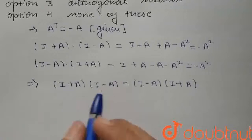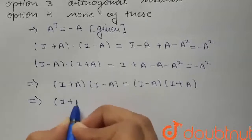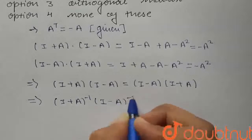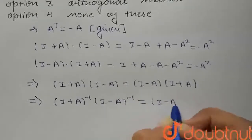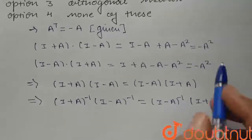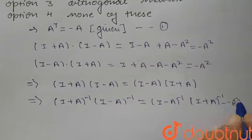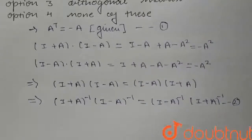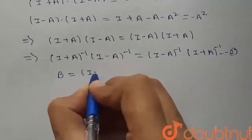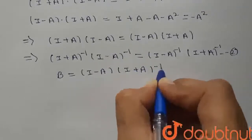Similarly, the same holds for the inverses. (I plus A) inverse into (I minus A) inverse equals (I minus A) whole inverse into (I plus A) whole inverse. We will consider this as equation number 2. It was given to us that B equals (I minus A) into (I plus A) whole inverse.